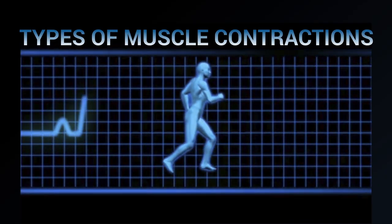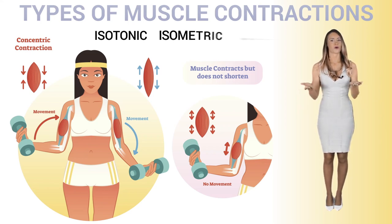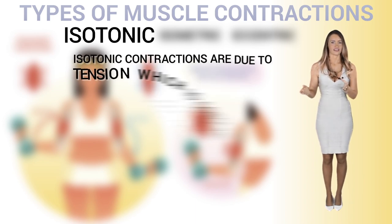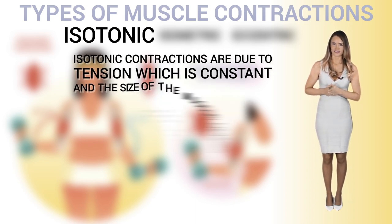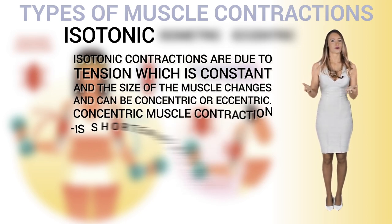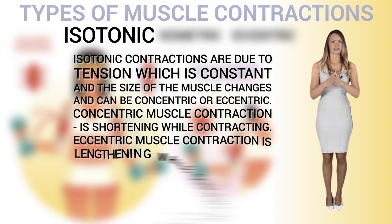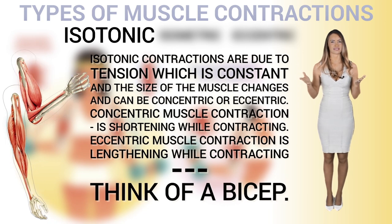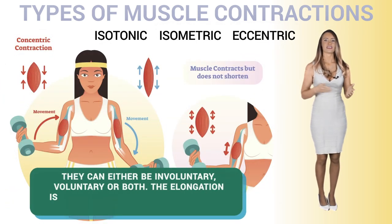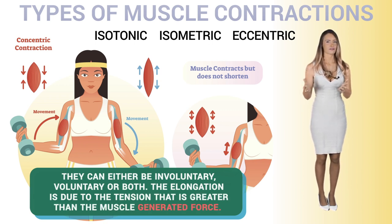Types of muscle contractions: Muscle contractions can be isotonic, isometric, or eccentric. Isotonic contractions are due to tension which is constant, and the size of the muscle changes — they can be concentric or eccentric. Concentric muscle contraction is shortening while contracting, and eccentric muscle contraction is lengthening while contracting. Think of a bicep. They can either be involuntary, voluntary, or both. The elongation is due to tension that is greater than the muscle-generated force.